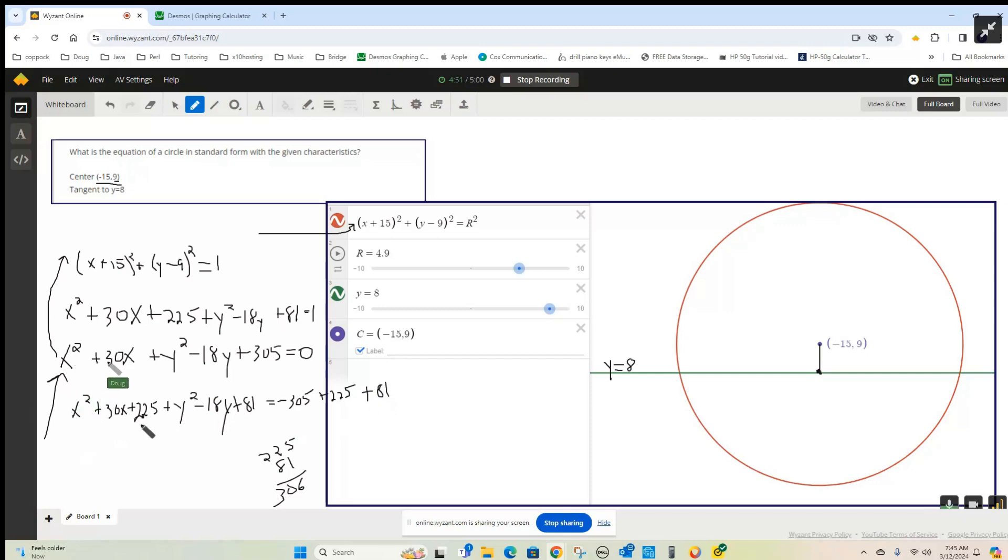And then each of these trinomials can be written as a binomial squared: (x + 15) squared. This trinomial can be written as, because it's a perfect square trinomial, (y - 9) squared, equals these add up to 1.